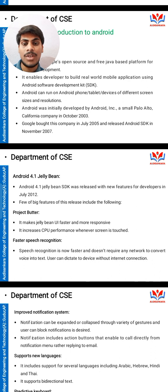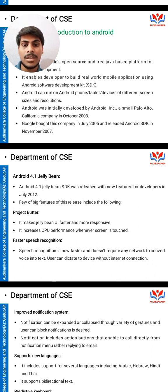Android versions: Android 4.1 Jelly Bean. The Android 4.1 Jelly Bean Software Development Kit was released with new features for development in July 2012. One of the big features of the release is Project Butter, which makes the Jelly Bean user interface faster and more responsive.